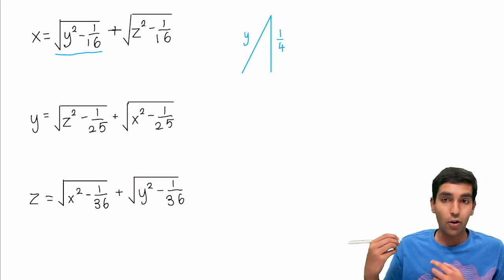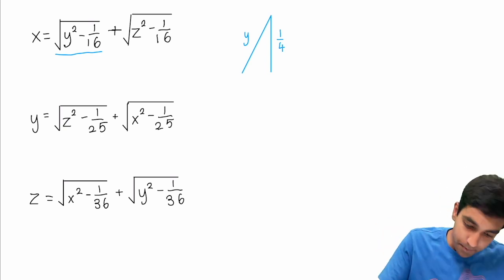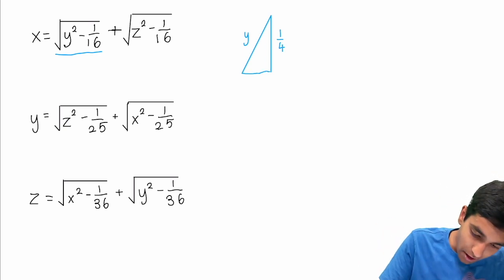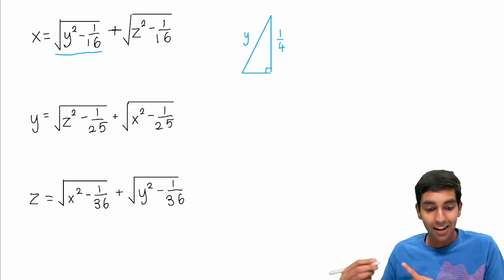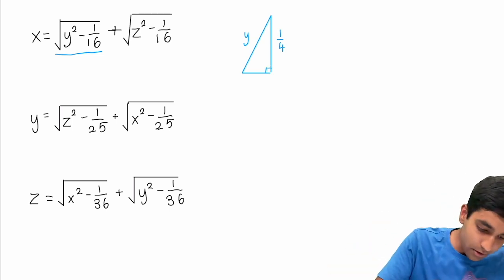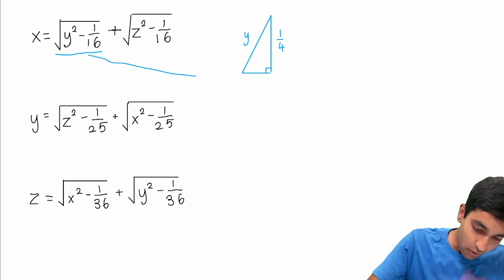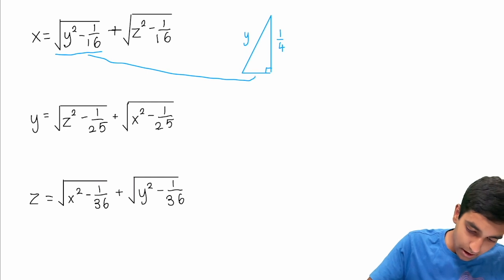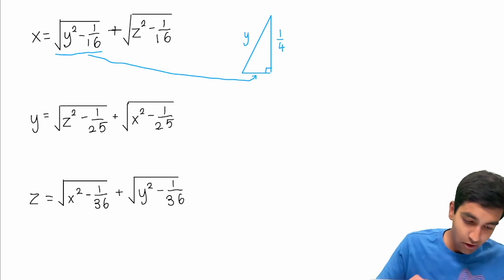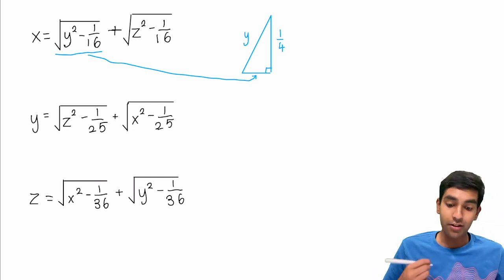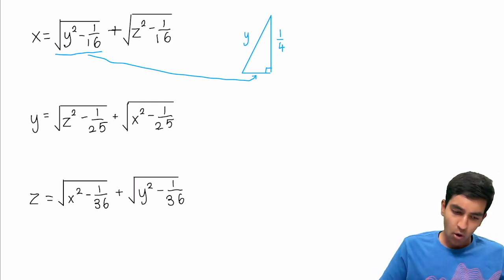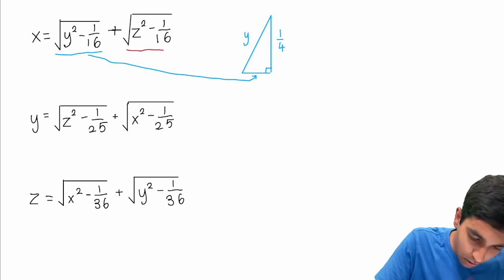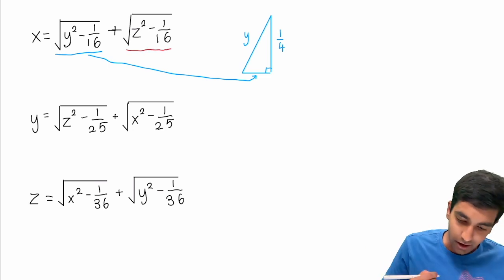By the Pythagorean theorem, we have that this other leg will be precisely the square root of y squared minus 1 over 16. We also have the square root of z squared minus 1 over 16 here, and we can use very similar logic.